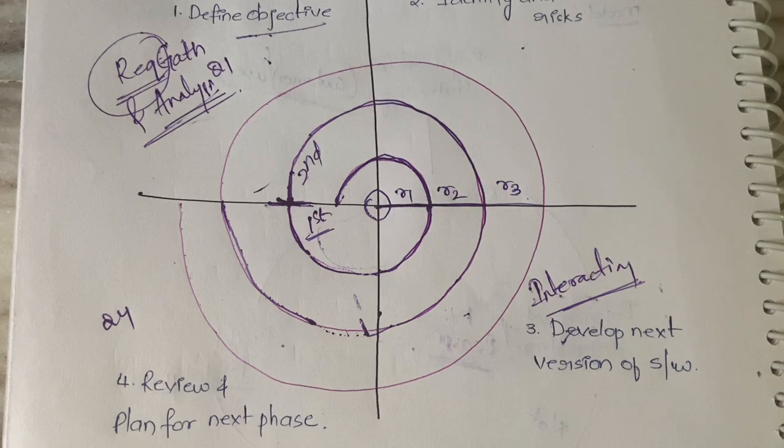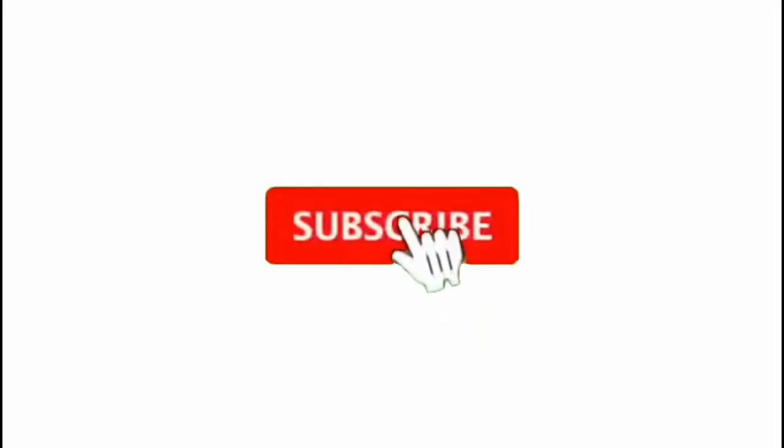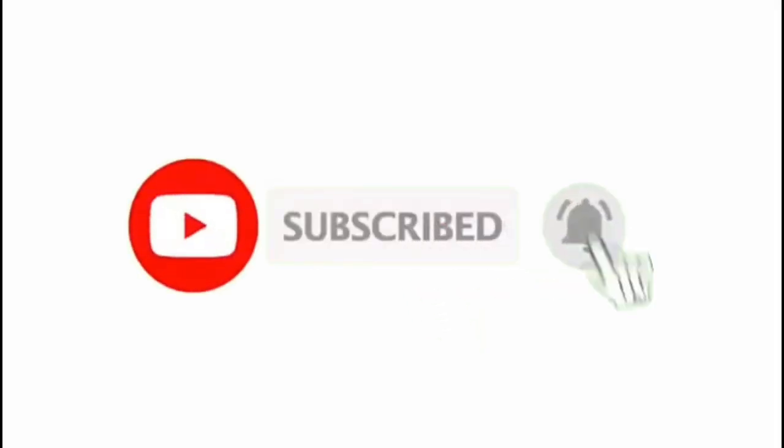This is about the spiral model. I hope this video is clear for you. See guys, again I'm telling you, software engineering is more of a theory subject. It all depends on how well you remember the things. That's all for this video. Let's meet up in the next video with another topic. If you still have any doubts, let me know in the comment section. Thanks for watching the video till the end. Bye.